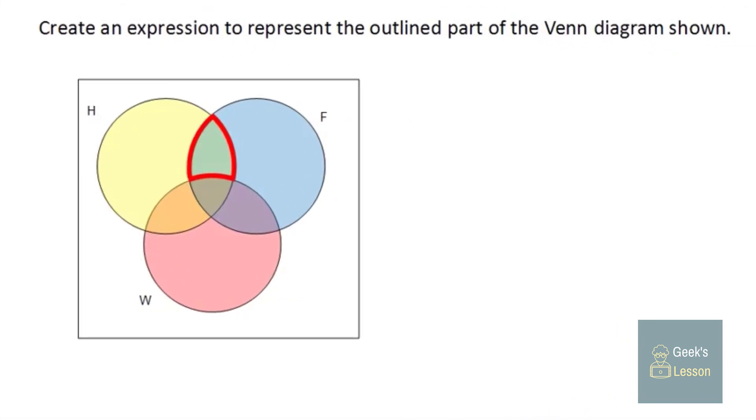So in this problem, we want to create an expression to represent the outline part of the Venn diagram shown. So we have this little piece of the Venn diagram outlined here. And so we need to think, what does that include? So we can see that the values here are in both sets H and F. So we could start by writing, perhaps, H intersect F. Because H intersect F would include everything that is in both sets H and F. But that's, H intersect F is too much.